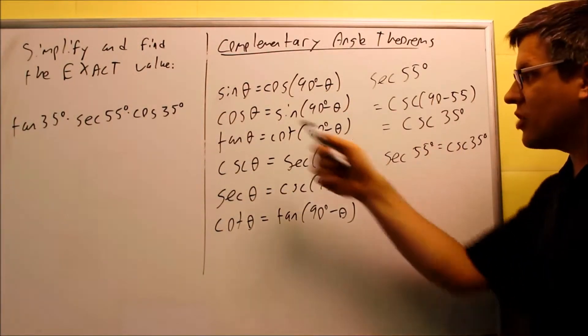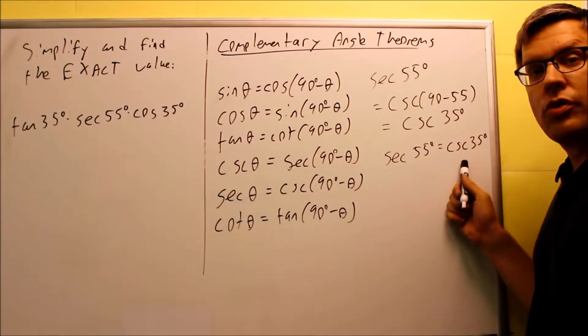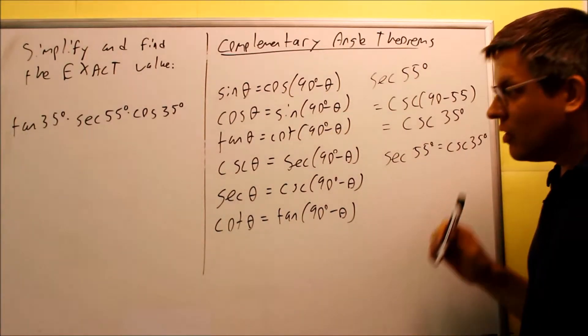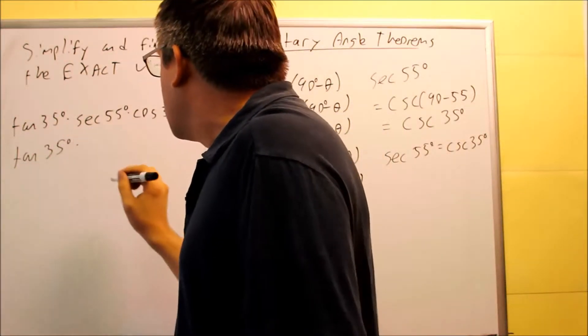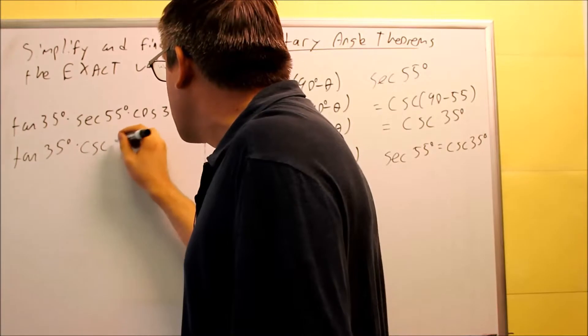So now, instead of secant 55, I'm going to replace it with cosecant 35. So let's rewrite that out. I have tangent 35 degrees times, I'm going to put in cosecant 35,